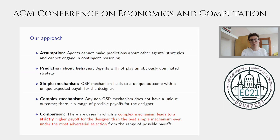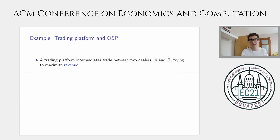What we're going to show is that there are cases in which a complex mechanism leads to a strictly higher payoff for the designer — strictly higher than in the best simple mechanism — even under the most adversarial selection from the range of possible payoffs. So even if we take the worst-case scenario when it comes to the resolution of strategic confusion, it can still be the case that the complex mechanism is strictly better for the designer. For most of this talk, I'll focus on a simple example to illustrate this possibility and will briefly describe what else we do in the paper more generally.